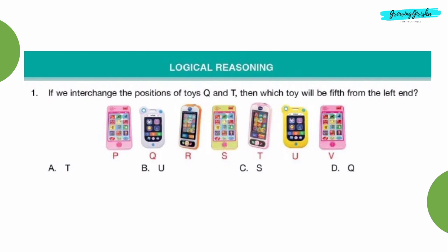Logical reasoning, question 1: If we interchange the positions of toys Q and T, then which toy will be fifth from the left end? Option D, Q.